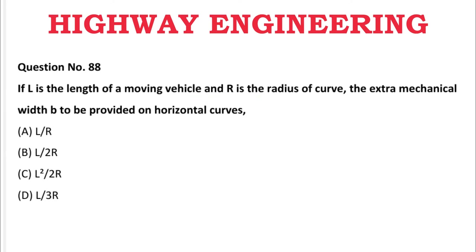Next question: If L is the length of the moving vehicle and R is the radius of the curve, the extra mechanical width B to be provided in horizontal curves is — A: L/R, B: L/2R, C: L²/2R, D: L/3R. The correct answer is C, L² divided by 2R.